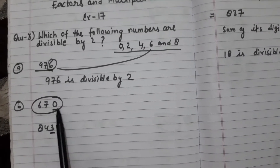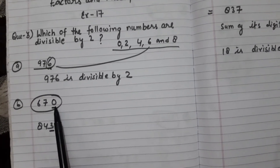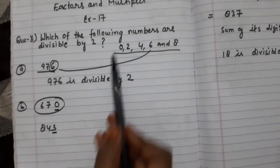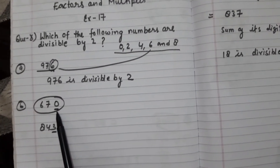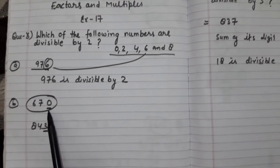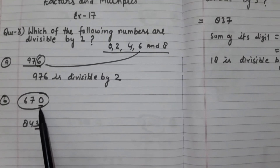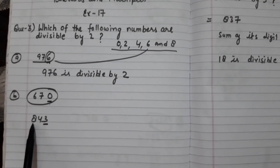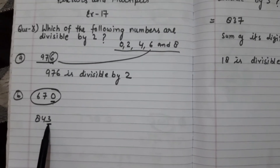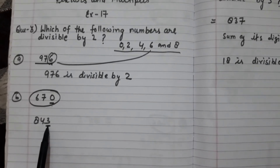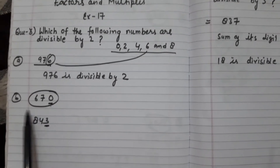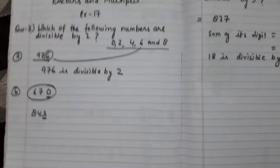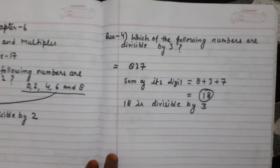Next, 670 — the unit digit is 0, which is an even digit. So this number is also divisible by 2.